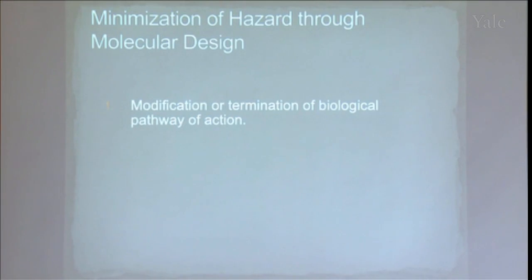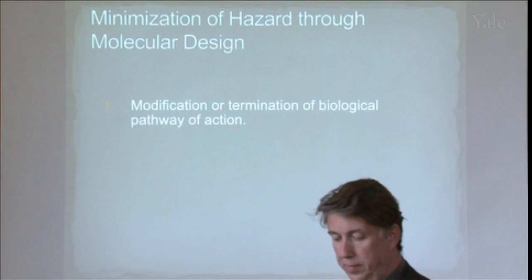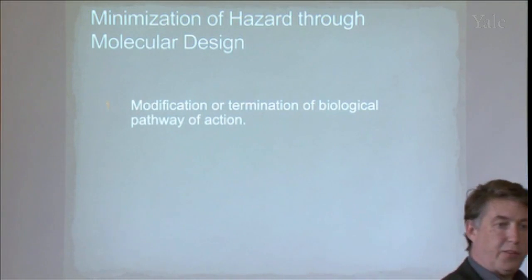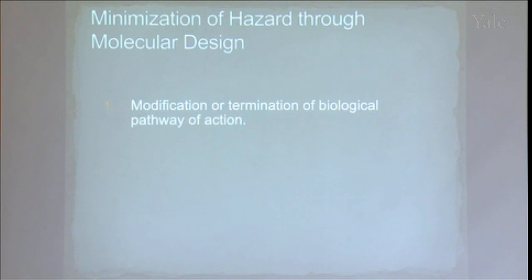What are some of the strategies to do this? You modify or actually break a mechanism of action that would lead to toxicity. So when you know the mechanism of what has to happen in the body in order to cause a toxic effect, you make that greatly disfavored through molecular design, or you make it impossible.